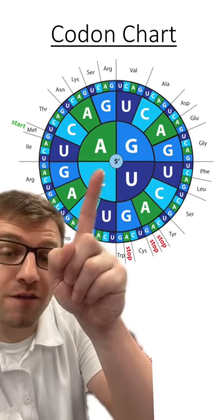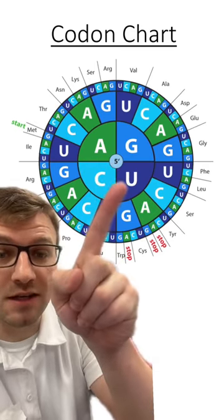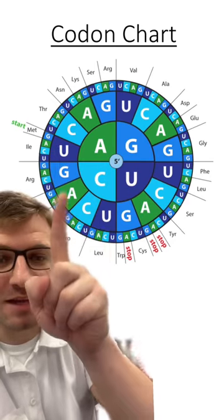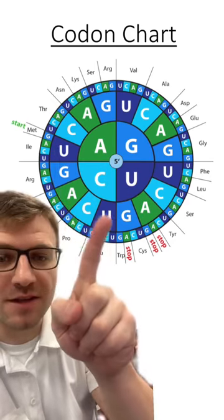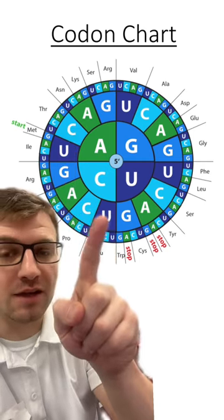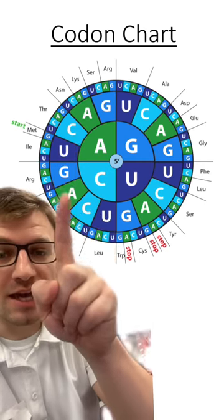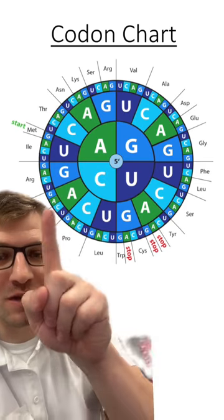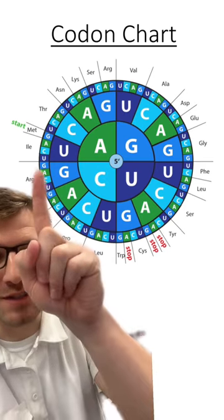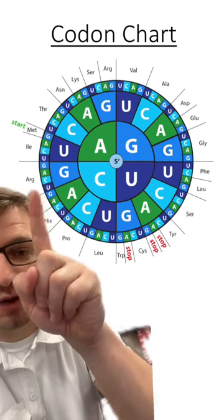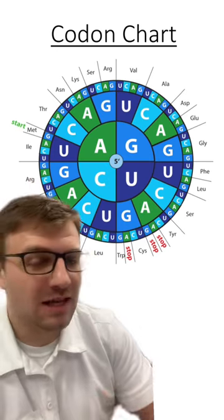We start all the way here in the middle with our first letter — you can see A, C, U, and G. Then the second letter is going to be on this second rung of letters; you can see each of which have four letters: G, A, C, and U. And the outside rung is going to be your last letter. You can see each one of these also has these four letters: G, A, C, and U.